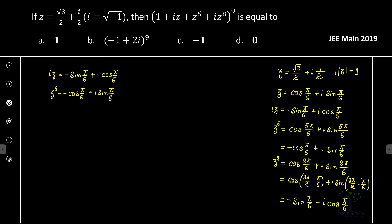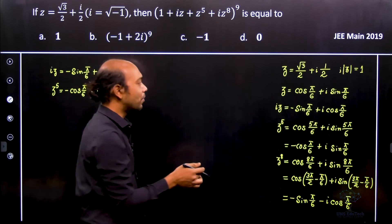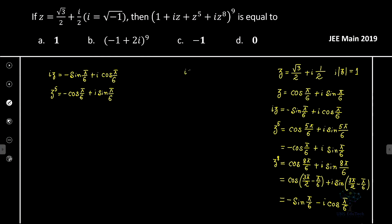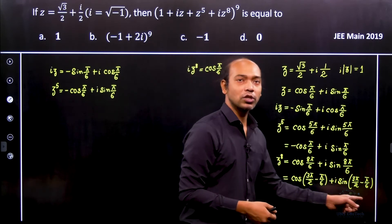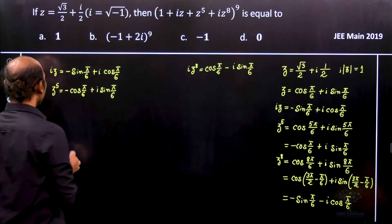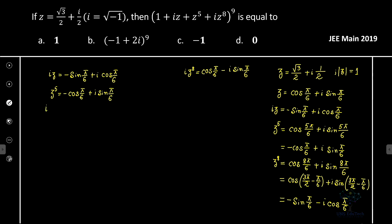Now we need i·z⁸, so we multiply z⁸ by i. Since i times −sin(π/6) − i·cos(π/6) gives i²·cos(π/6) for the second term and i² = −1, we get: i·z⁸ = cos(π/6) − i·sin(π/6).